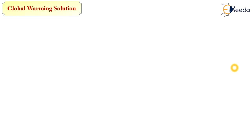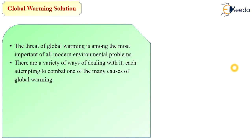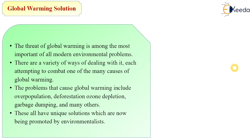The threat of global warming is among the most important of all modern environmental problems. There are a variety of ways of dealing with it, each attempting to combat one of the many causes. The problems that cause global warming include overpopulation, deforestation, ozone depletion, garbage dumping, and many others — all of which have unique solutions now being promoted by environmentalists.